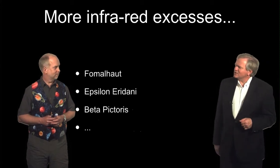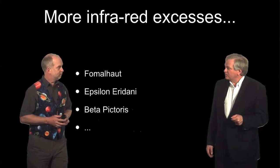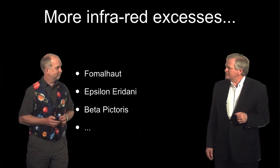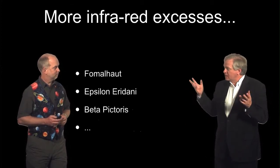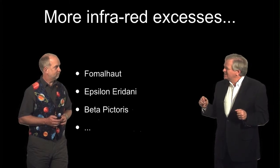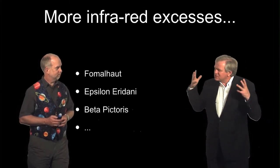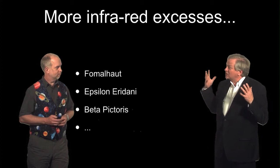So Paul, I'm pretty convinced it doesn't appear to be a planet going around Vega that explains that infrared excess, but when we look at a lot of stars in the nearby neighborhood of the Sun, what we saw in Vega seems to be something we see around a lot of stars.